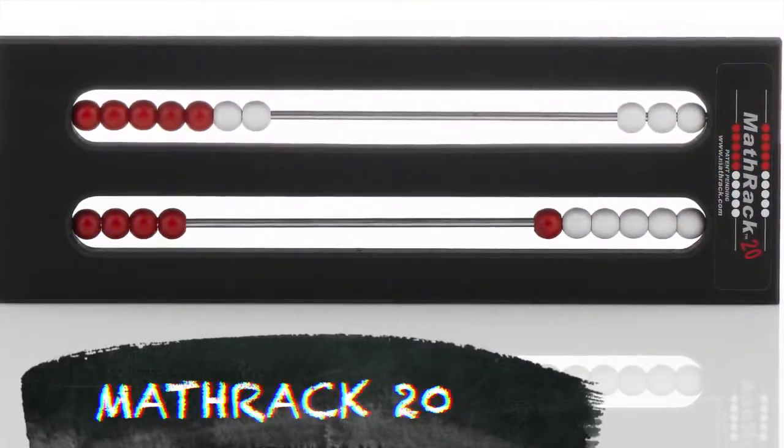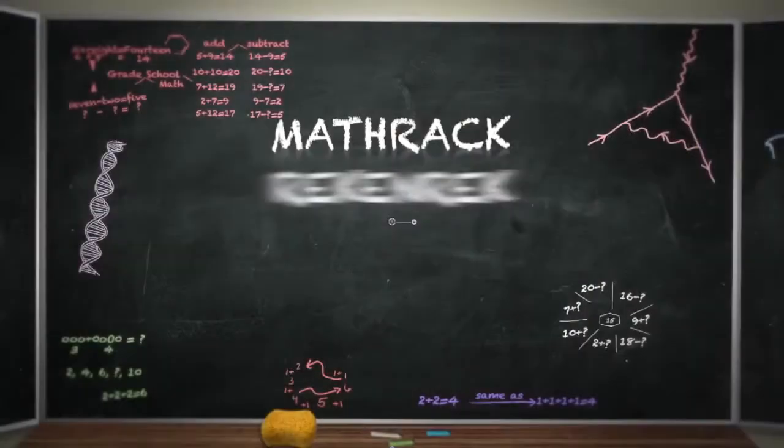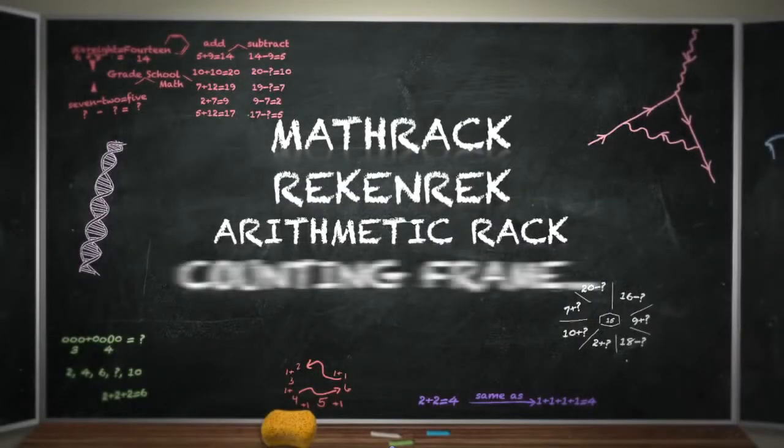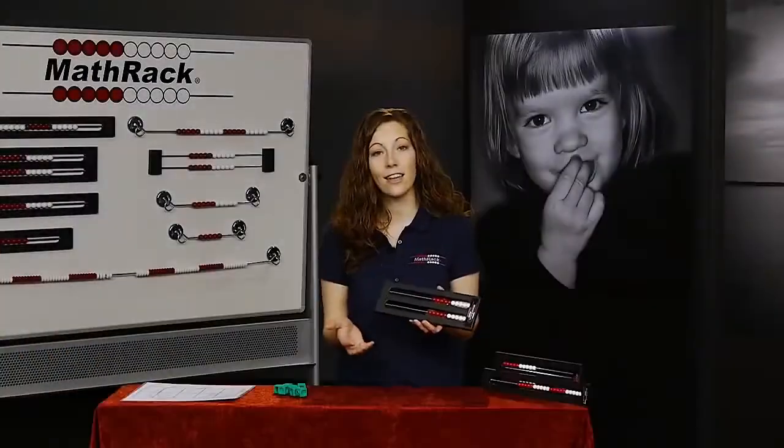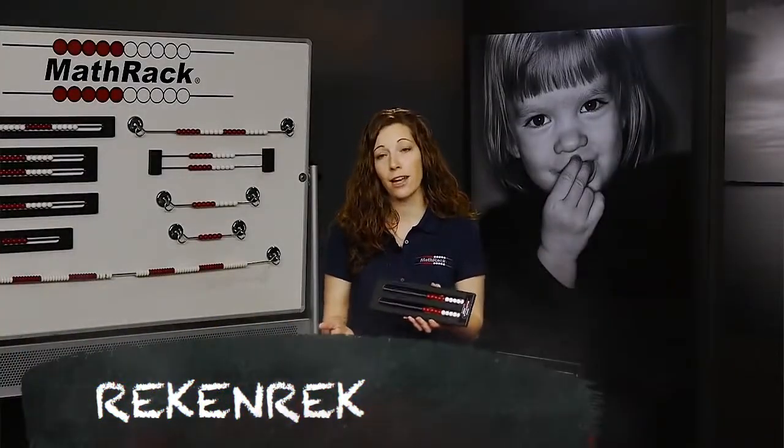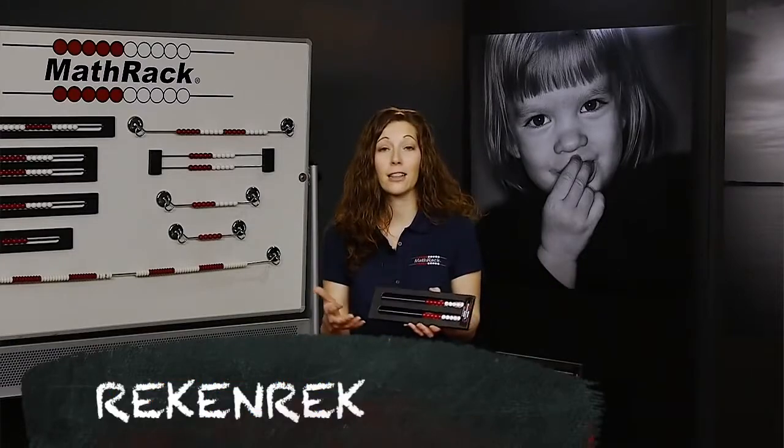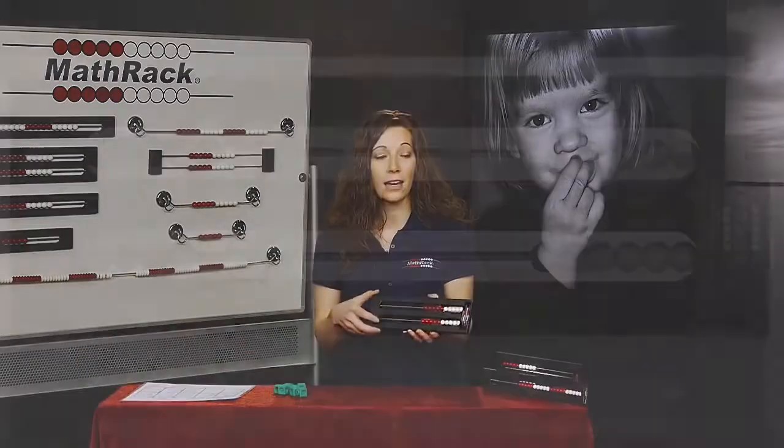It's called a Math Rack 20. It's also known as a Rekenrek, an arithmetic rack, a counting frame. It's got lots of variations. It was originally designed in the Netherlands and it was called a Rekenrek. The translation over to the United States has created lots of different variations of that name.